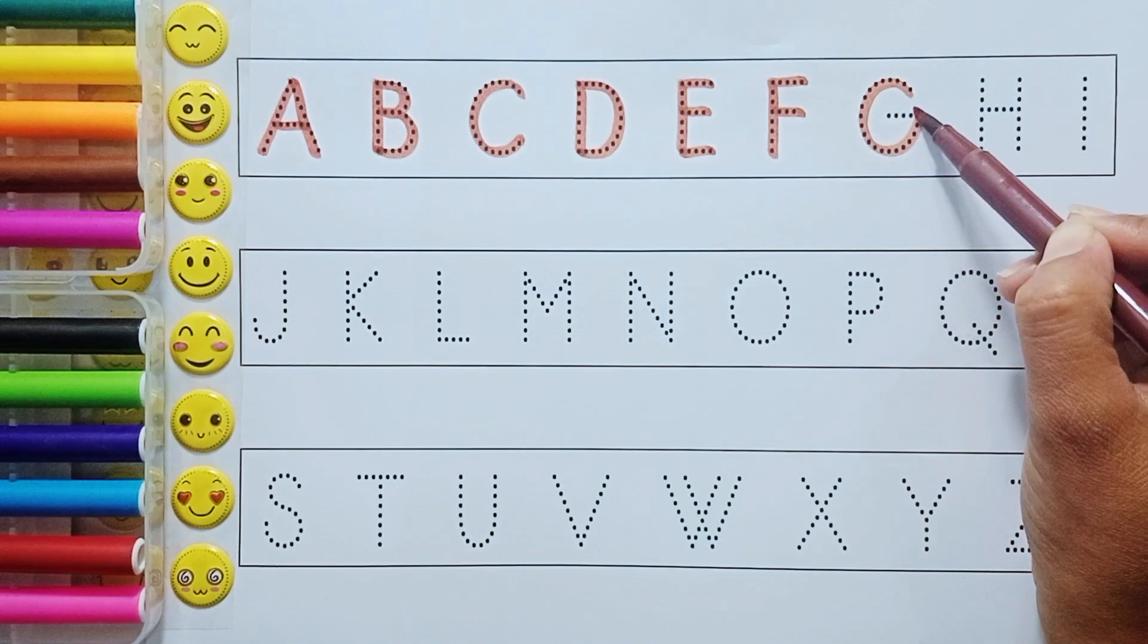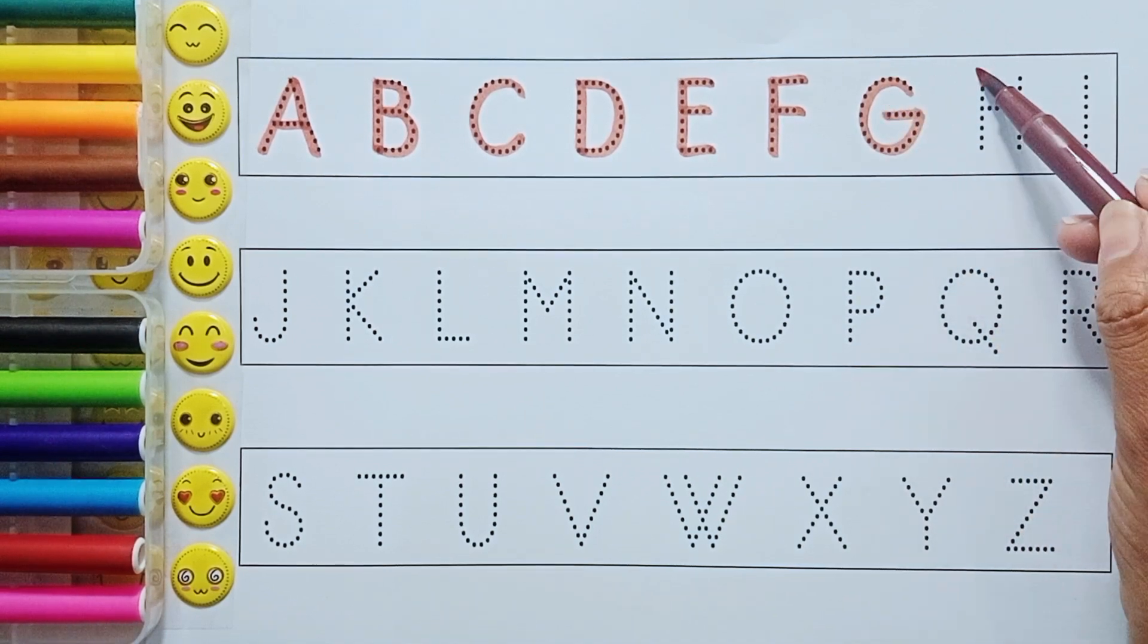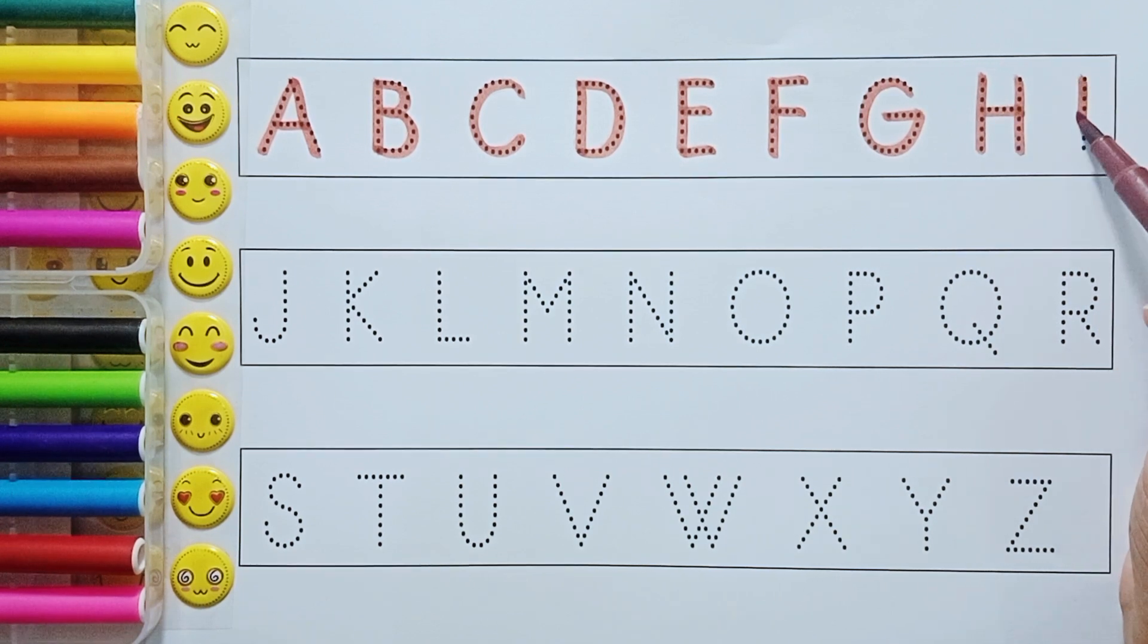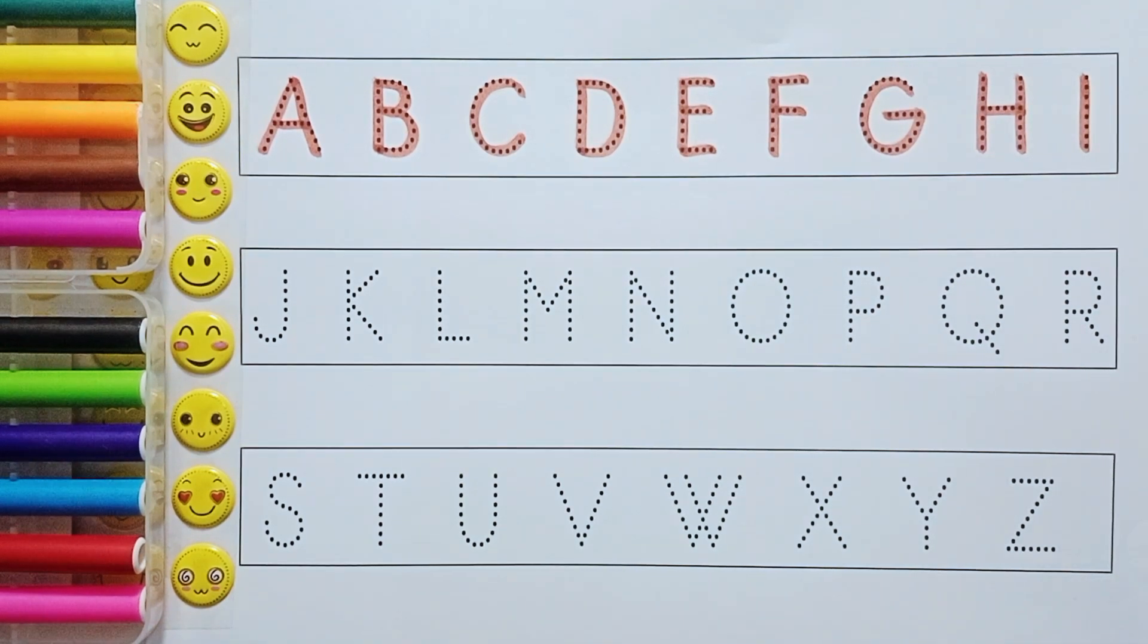G. G for gate. H. H for hand. I. I for insect. I for insect. Yellow color.